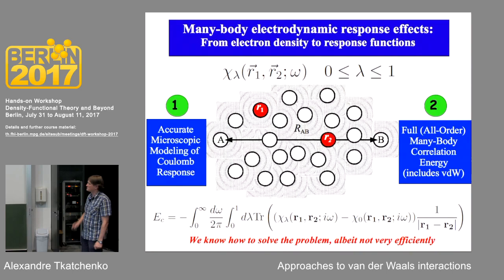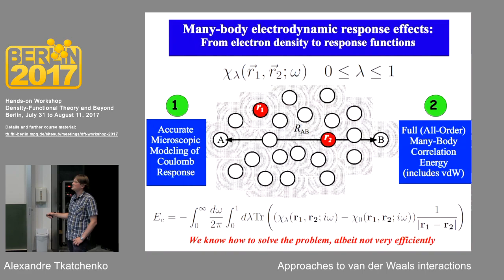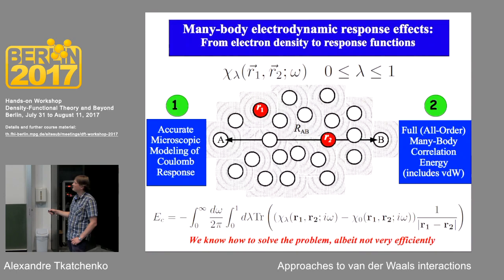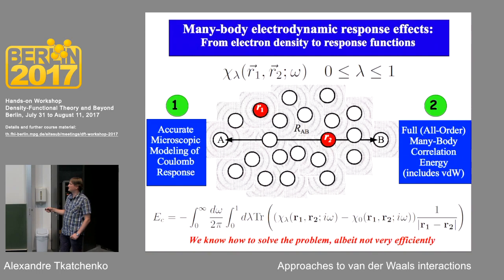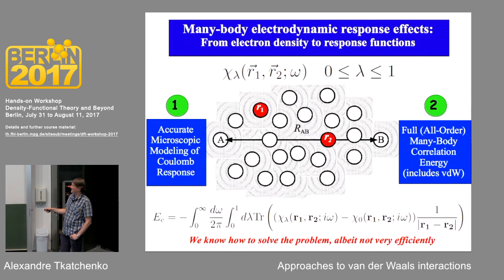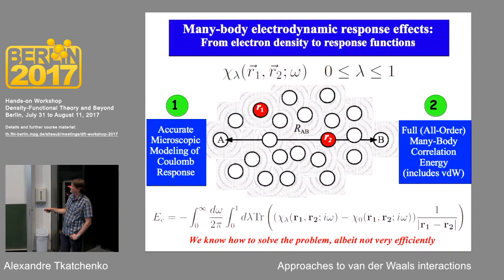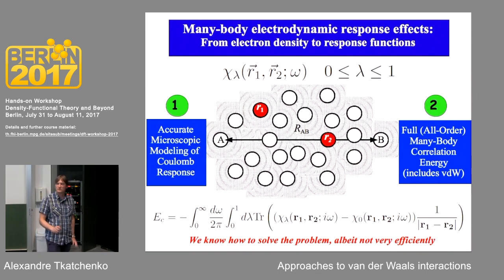This is computed via the adiabatic connection fluctuation-dissipation theorem (ACFDT) — an exact expression for the correlation energy of any electronic system in terms of the linear density-density response function. With the exact response function, this is equivalent to solving the Schrödinger equation exactly. We integrate over frequency (the same imaginary-frequency integral as before), over the adiabatic coupling constant λ, and over spatial positions R1 and R2 — the difference between the interacting and non-interacting response functions multiplied by the Coulomb potential.